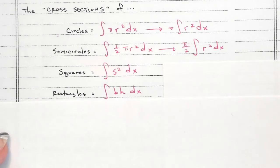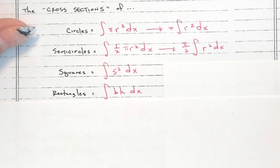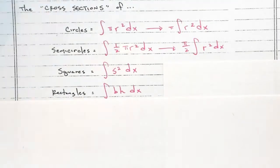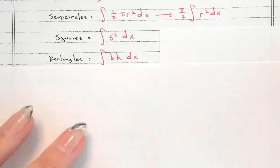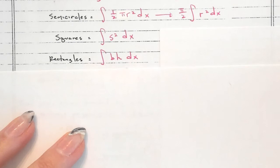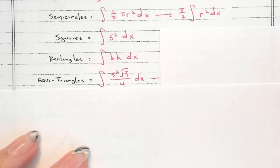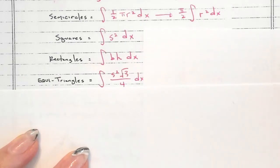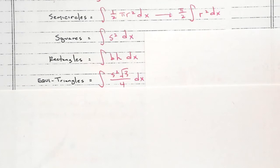For rectangles, the area is base times height — you have to figure out what the base is and what the height is. And then equilateral triangles: those are a special type of triangle.